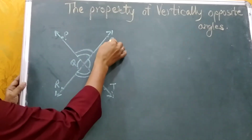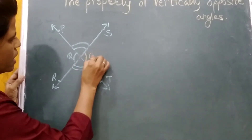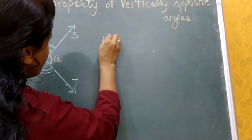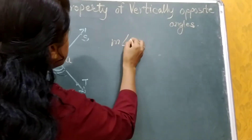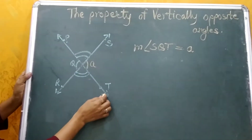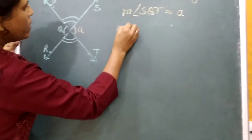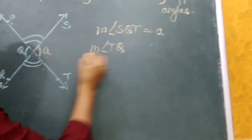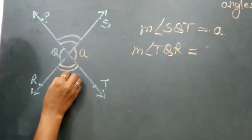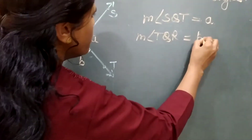In this, let's see: angle SQT forms here an angle A. The measure of angle SQT is equal to A. Now see here, the measure of angle TQR — let's suppose this angle is B. So the measure of angle TQR is equal to B.